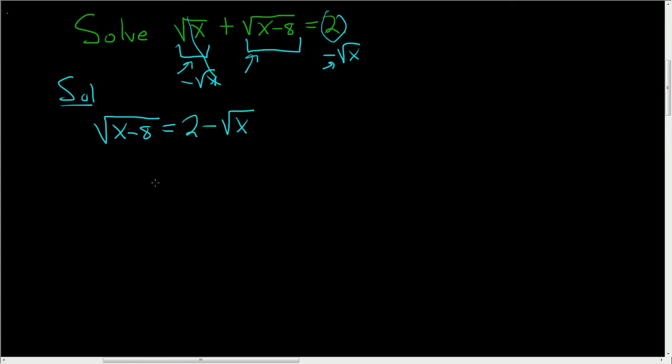Again, keep in mind we're looking for x, but it's kind of trapped inside the square root. So what we'll do is square both sides to get rid of the square root. So over here you have x minus 8.